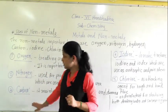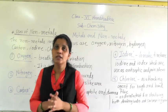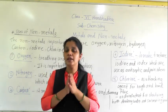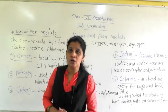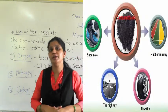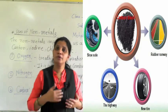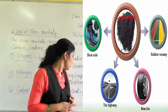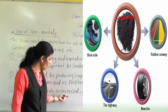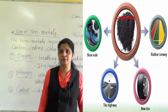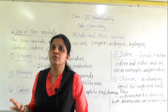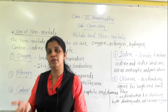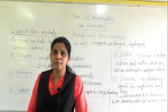The next non-metal is carbon. In chemistry, carbon is very important — so many compounds are made from carbon. When you go to higher classes you will learn about organic chemistry. Carbon mainly occurs as coal, graphite, and diamond. In 8th standard you learn about the uses of coal and coal products; more detail will come in higher classes.